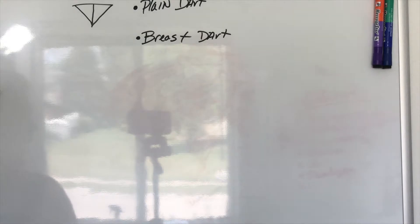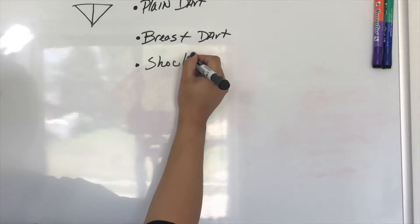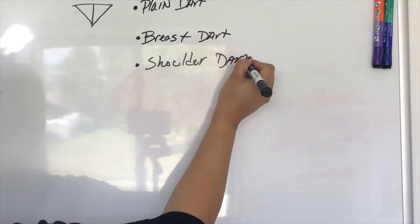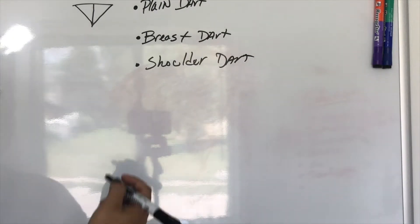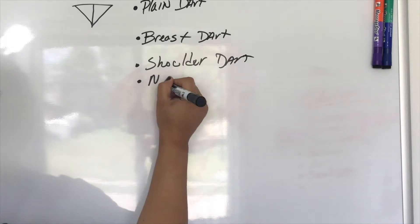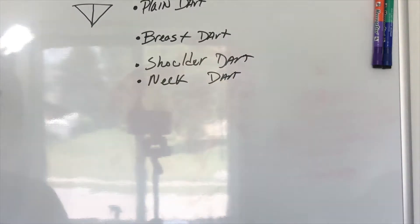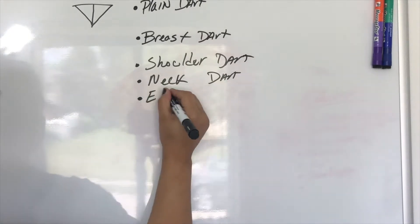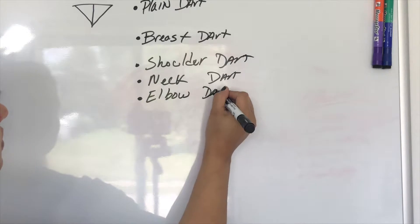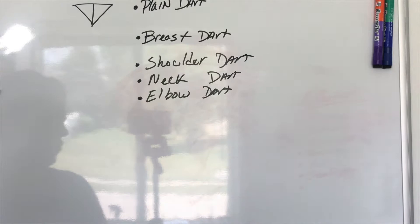Then we have the shoulder dart — as the name says, it's going to be at your shoulder, and it's very simple. Another one is the neck dart, which goes around your neck area. The next one is the elbow dart — that's not as common as people think, and I don't see that one as much.